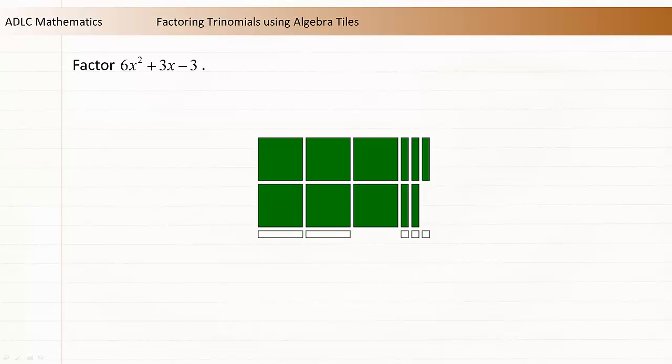Here's one pair, a second pair, and a third pair. We now have a rectangle. You need to be careful when introducing zero pairs. Remember that each of the rectangles made of x tiles needs to contain all positive x tiles, or all negative x tiles.